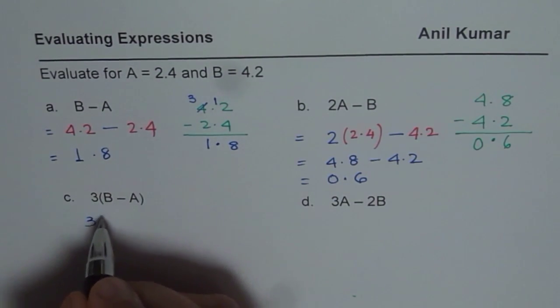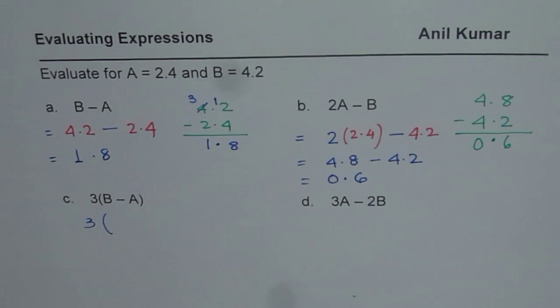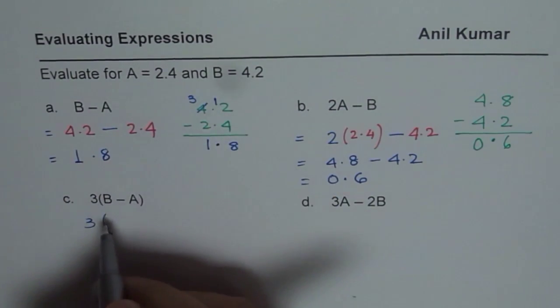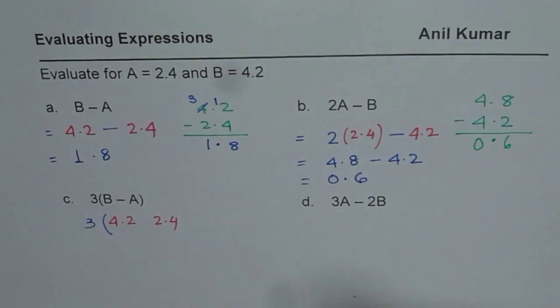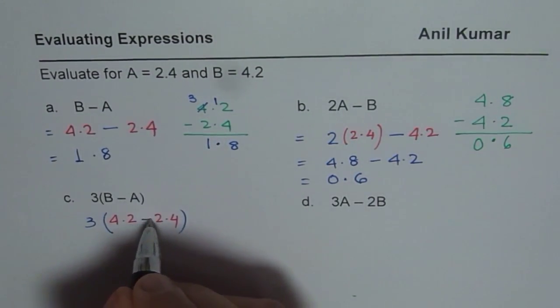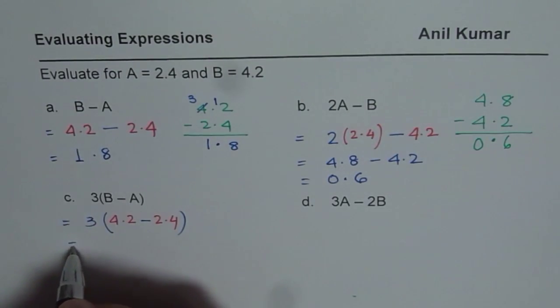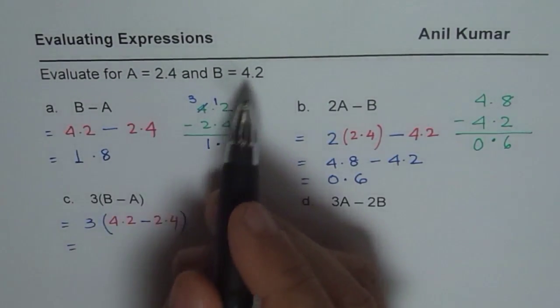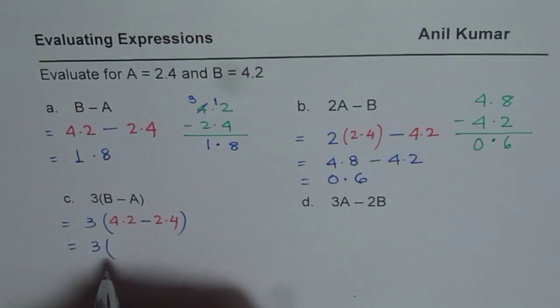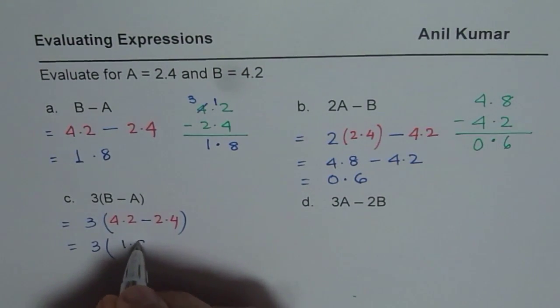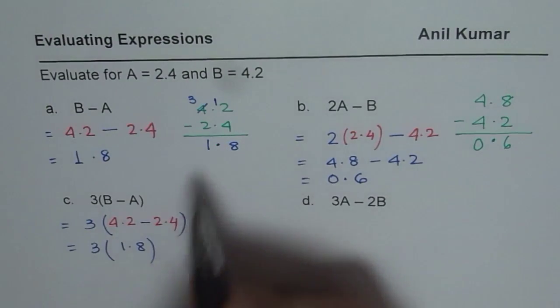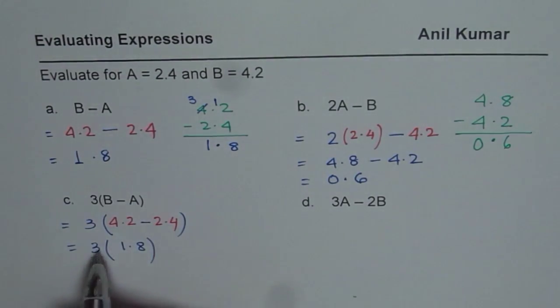Let us continue. So we have 3 times within brackets, B minus A. B is 4.2, so 4.2 and A is 2.4. So I am just writing those variables in different name so that you understand how we got these values. So we get 3 times, 4.2 minus 2.4 is 1.8. So I am using that value at present. Otherwise you need to find it.